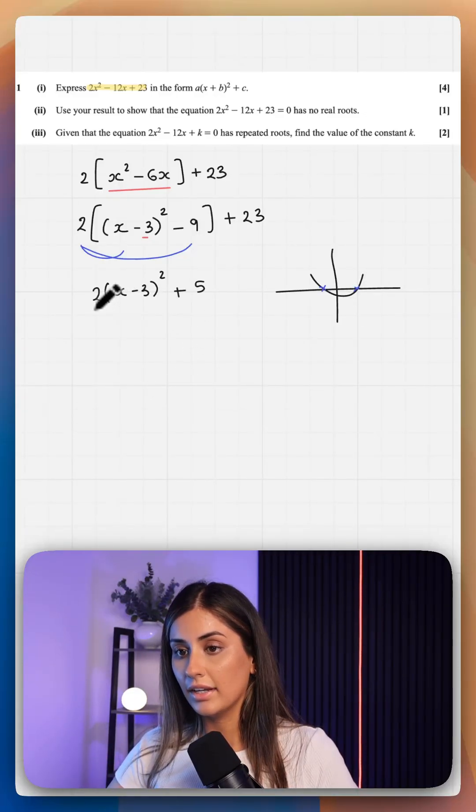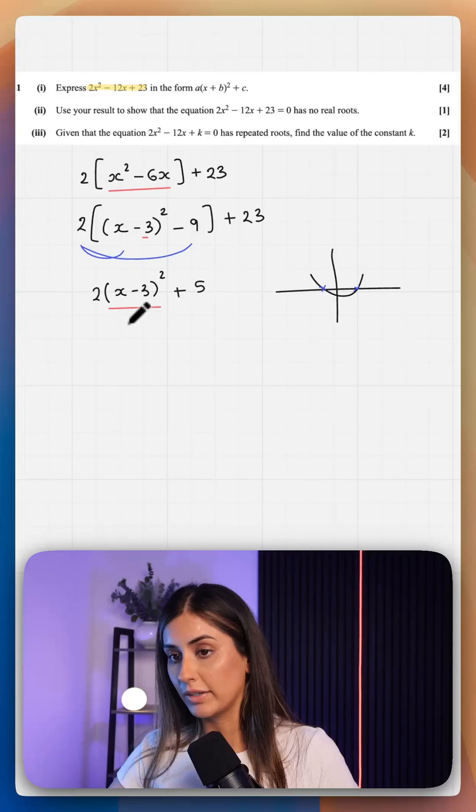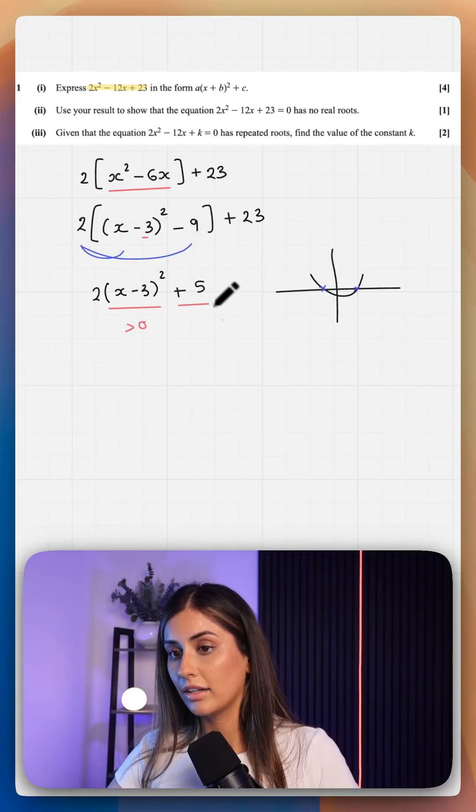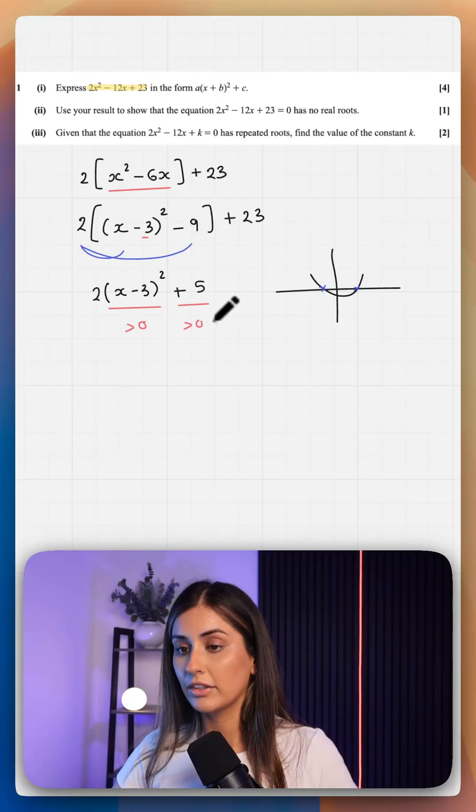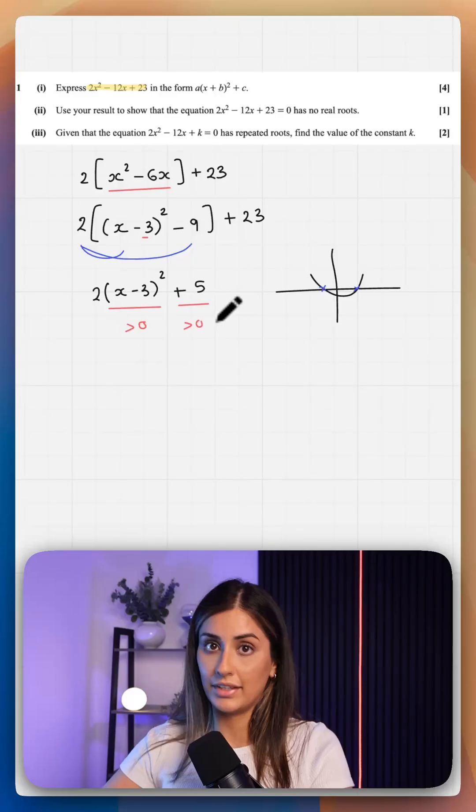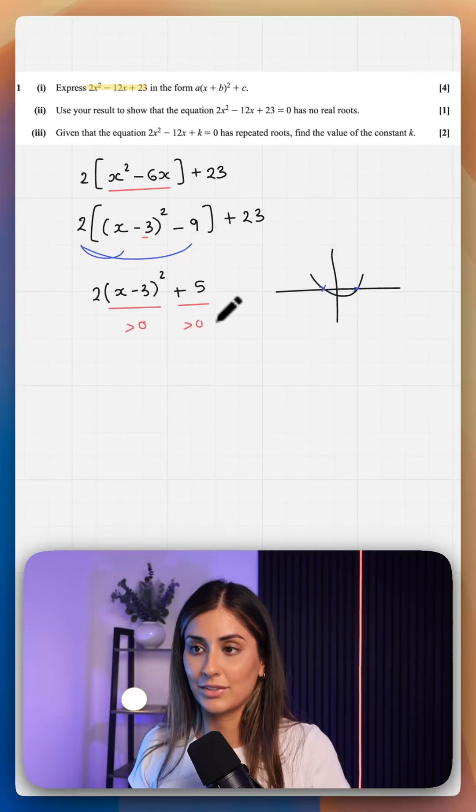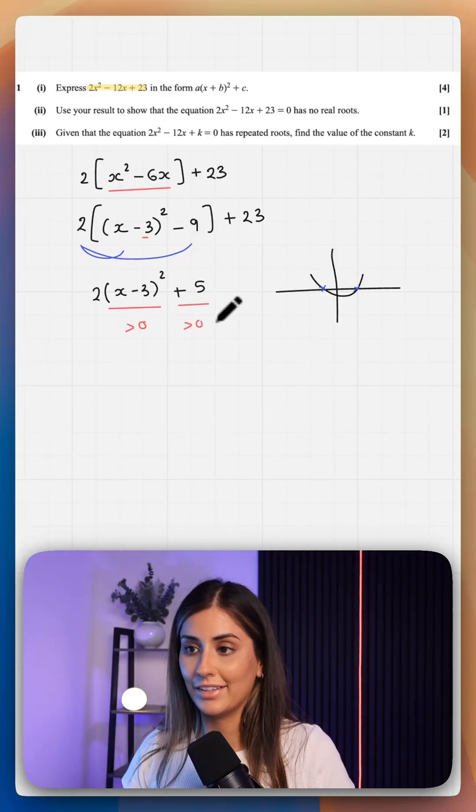But we can see here that anything squared is greater than 0, and adding a 5 is also greater than 0, so your entire quadratic is above the x-axis and so it has no real roots. You can conclude on that how you want to.